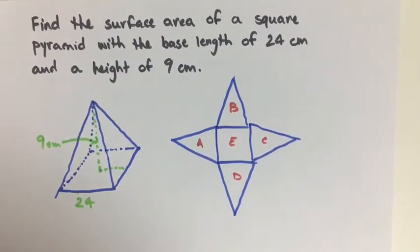All right, so here we want to find the surface area of a square pyramid with the base length of 24 centimeters and a height of 9 centimeters.